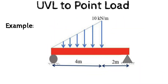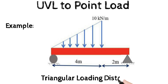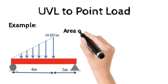Next, to convert UVL to point load. Consider a beam with a load intensity of 10 kilonewton per meter triangular load over a 4 meter length. Since it is a triangular load, one end of the triangle has zero intensity and the other end has 10 kilonewton per meter load intensity. To convert this triangular loading distribution to a point load, we use the area of triangle concept.